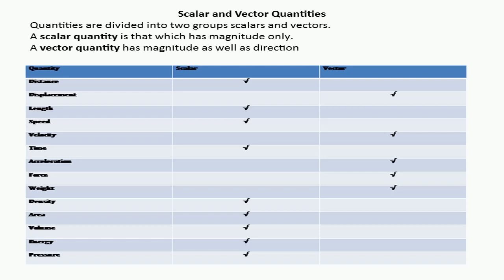The second group of physical quantities is vector quantities. A vector quantity has magnitude as well as direction. For the representation of vector quantities, we need both magnitude — meaning the quantity — and the direction in which it is moving.